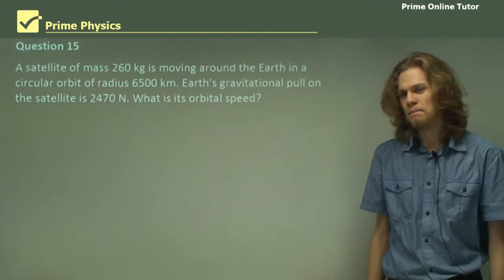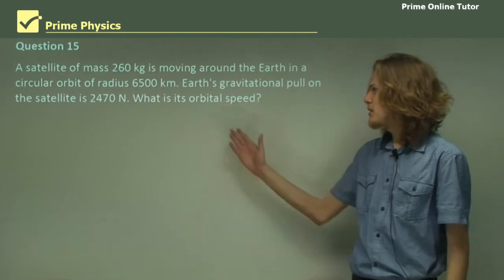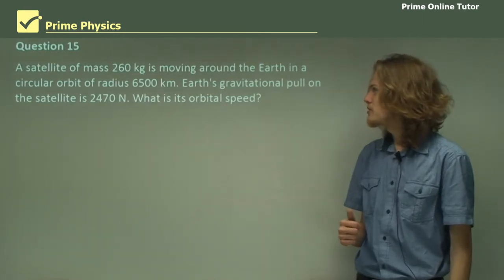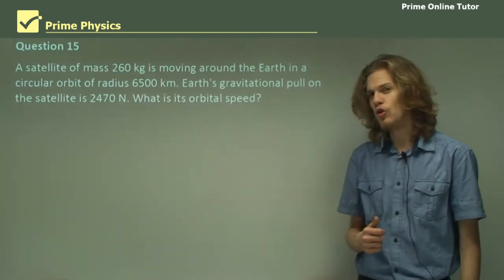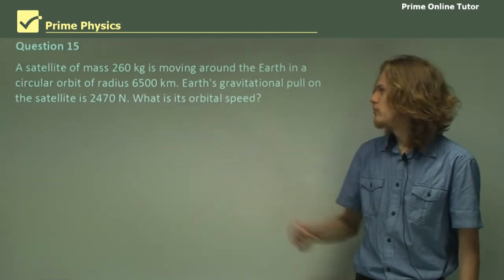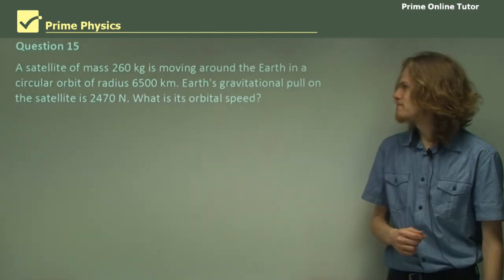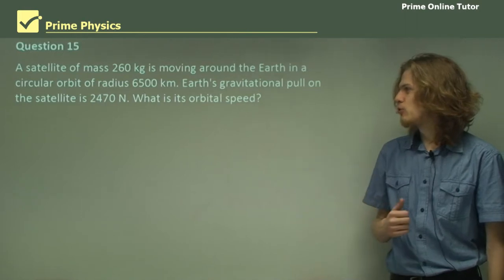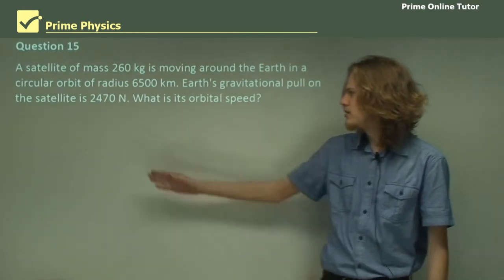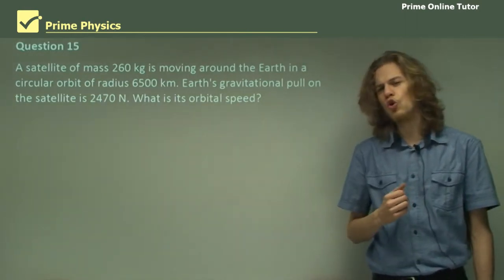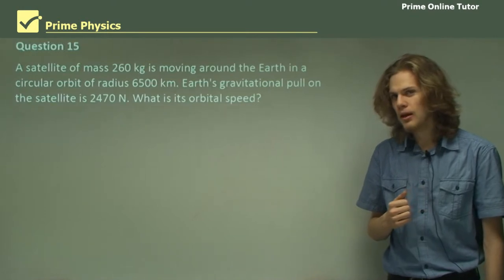Question 15. A satellite of mass 260 kilograms is moving around the Earth in a circular orbit of this radius. Earth's gravitational pull on the satellite is this force. So what is its orbital speed?